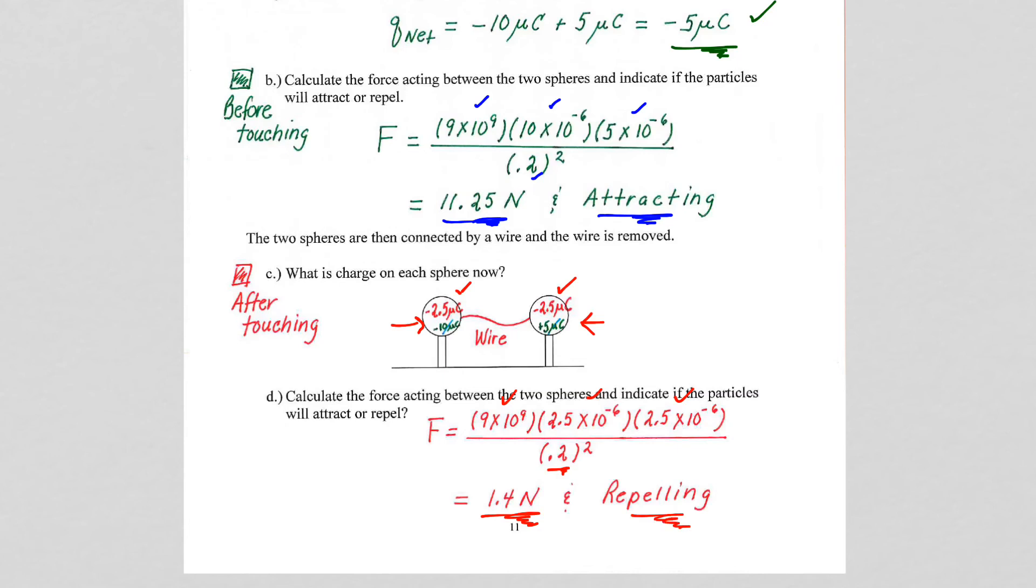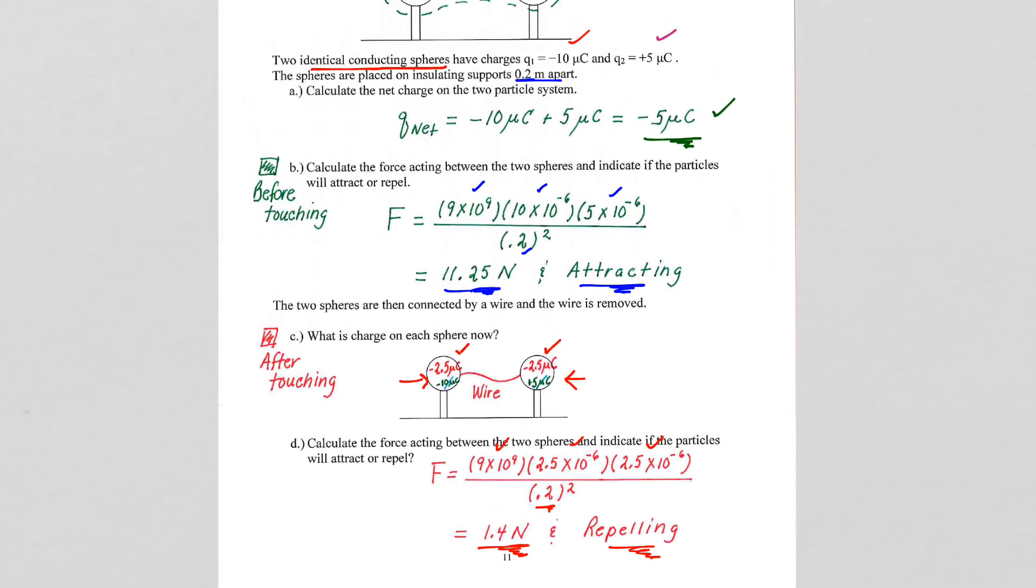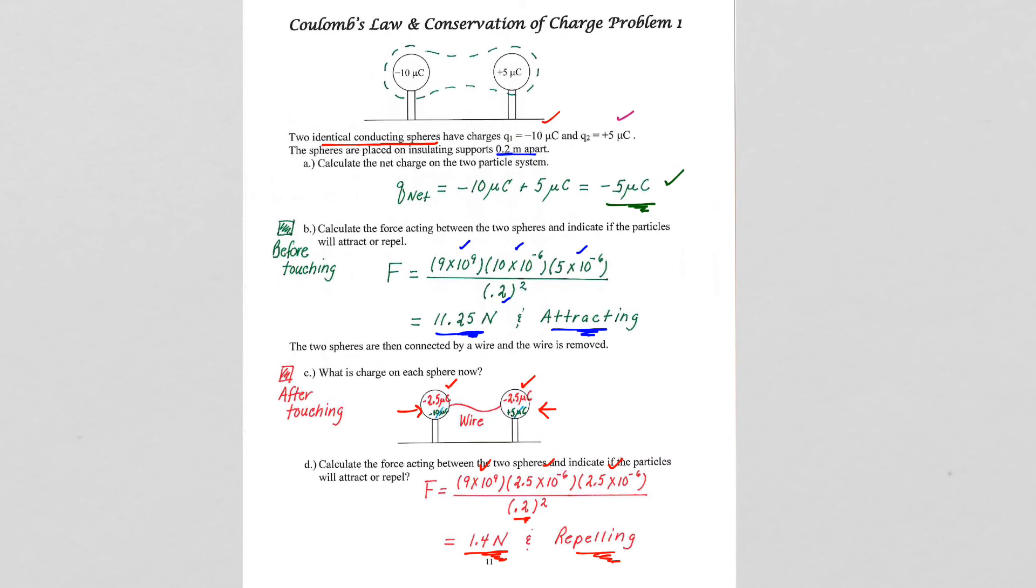Be a little careful in thinking what conservation of charge means and what's the same and what has the ability to be different. What's the same is the net charge, and that's really all conservation of charge is giving us. It's important because we will be utilizing it to solve other more difficult problems, as we'll see in our next example.